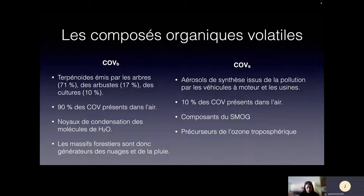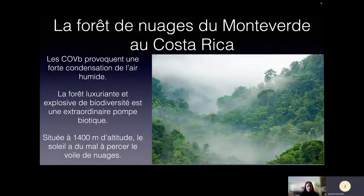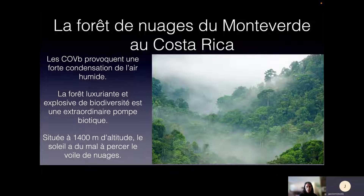C'est vraiment des choses nouvelles dans la littérature scientifique — il y a 15 ans, on ne parlait pas de ça. On peut le voir avec des exemples très spectaculaires, comme la forêt de nuages au Costa Rica. Les nuages y provoquent énormément de condensation de l'air humide. On les appelle les forêts de nuages pas pour rien : c'est une forêt très luxuriante, explosive de biodiversité, une extraordinaire pompe biotique. Même si c'est situé à 1 500 mètres d'altitude, le soleil a du mal à percer le voile de nuages causé par ces forêts. C'est un exemple plus éloquent que chez nous, mais tout de même très bien documenté.